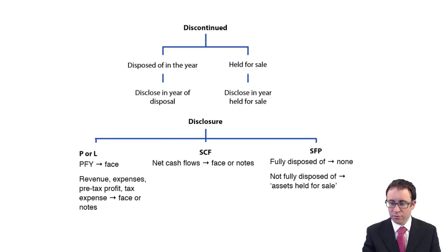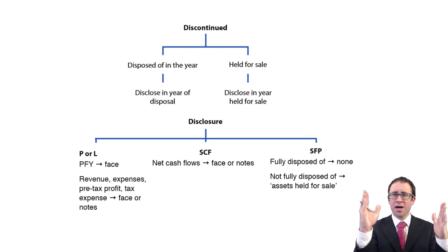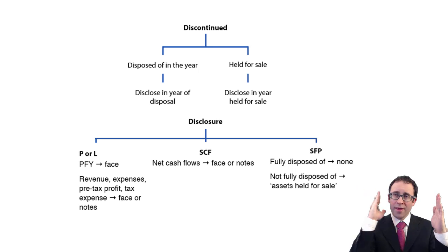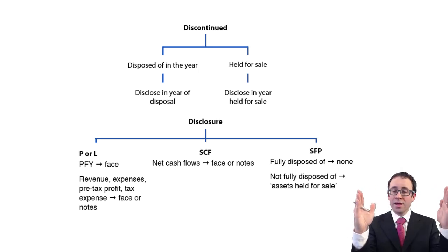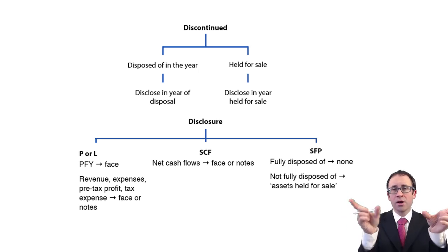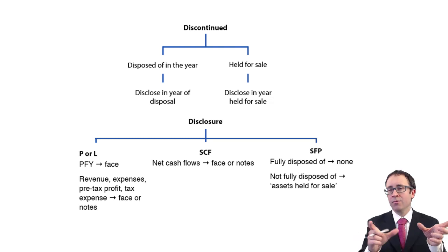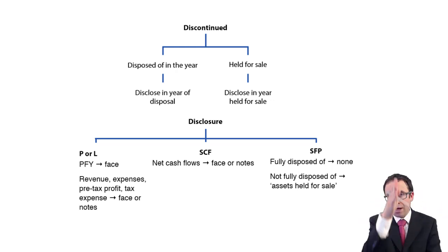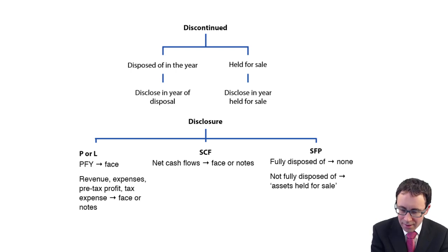In terms of when we show it as being discontinued: this is where we decide we need to sell it, and this is where it is actually disposed of, with the reporting date in the middle. Once we've made the decision that it will be discontinued and it's held for sale, then we make the disclosure. Likewise in the following year when it is actually disposed of, we will make the disclosure as well. So within two reporting periods we will have a discontinued operation. If both decisions take place in the same accounting period then we will just have one year worth of a discontinued operation.